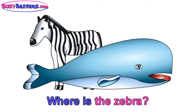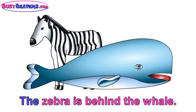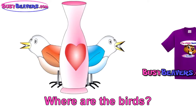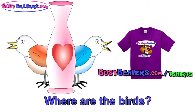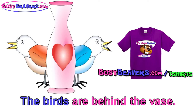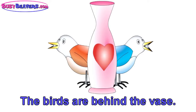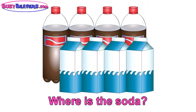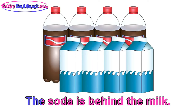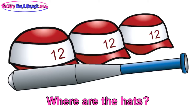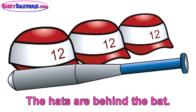Where is the zebra? The zebra is behind the whale. Where are the birds? The birds are behind the vase. Where is the soda? The soda is behind the milk. Where are the hats? The hats are behind the bat.